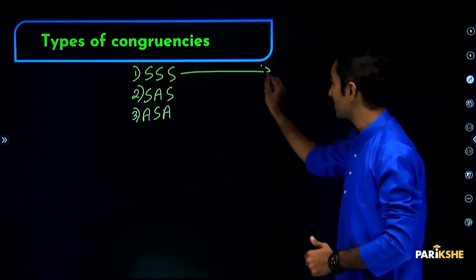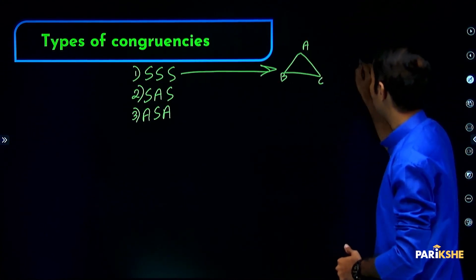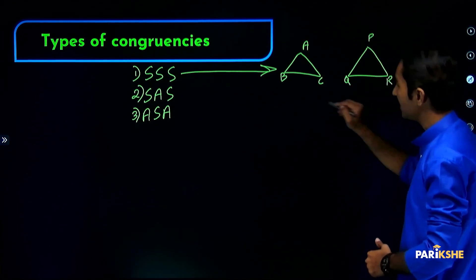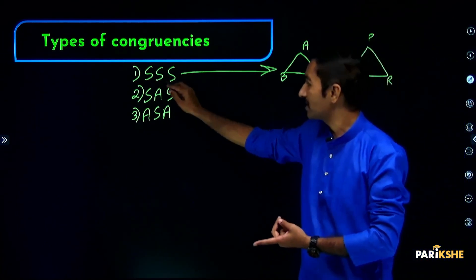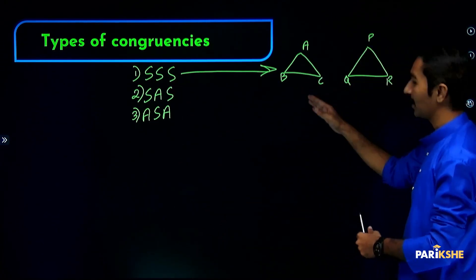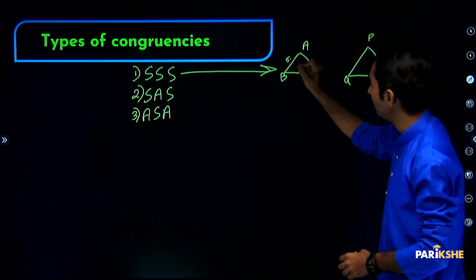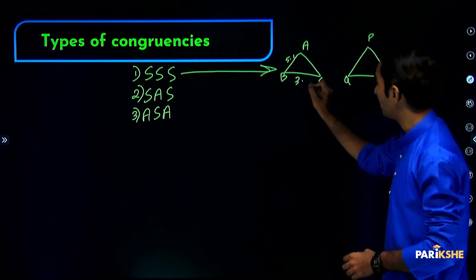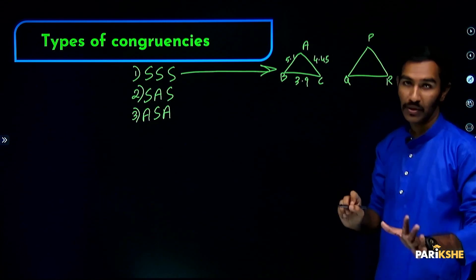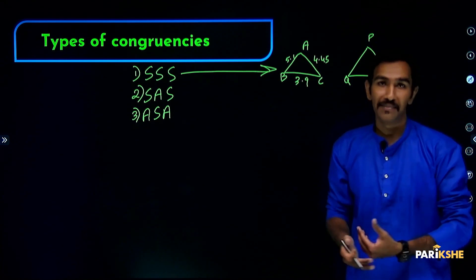First is SSS congruency. For example, take triangle ABC and triangle PQR. SSS means three sides, side-side-side. When in two triangles all three sides match, then AB side...